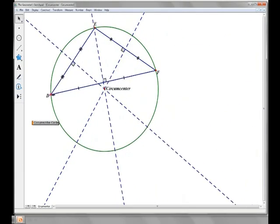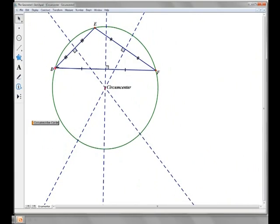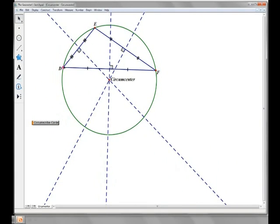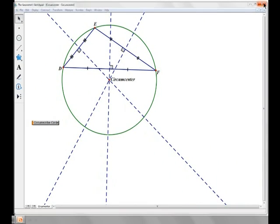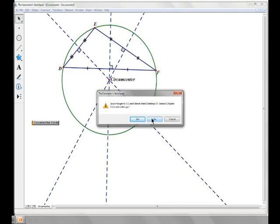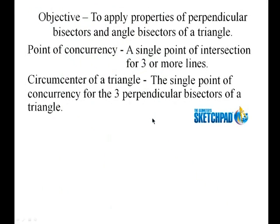And as soon as you're done messing around with this and showing kids how the perpendicular bisectors make the circumcenter, all you've got to do is close it out. And it asks you if you want to save it, I would say no, just keep the original version of that file.